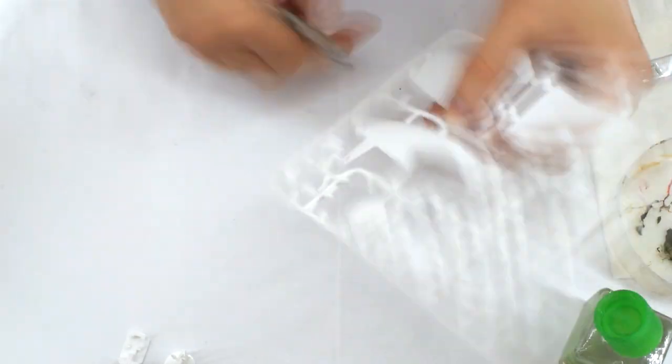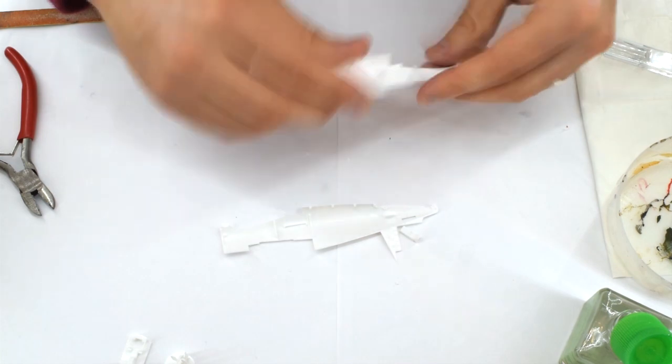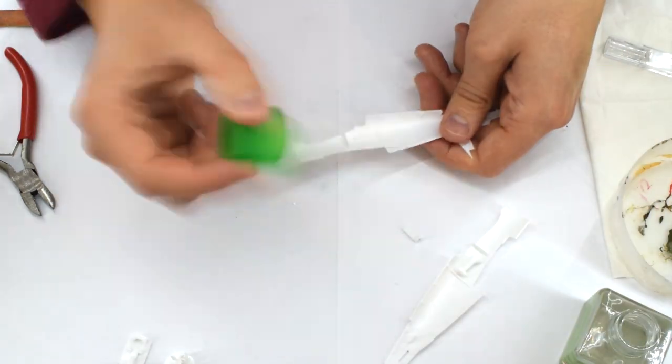Next, I removed the fuselage halves from their sprue and cleaned them up with a nail file. The cockpit instrument panels were then cemented into their respective halves.